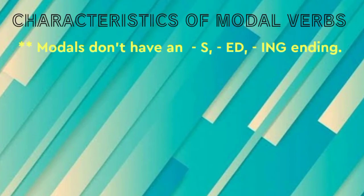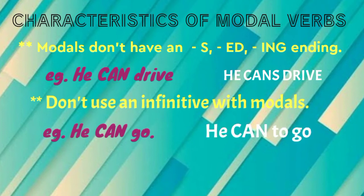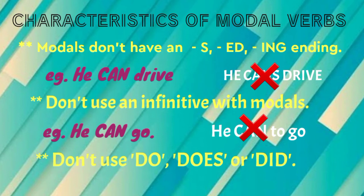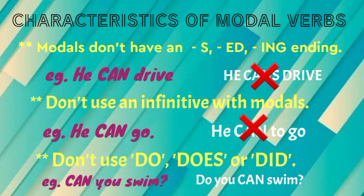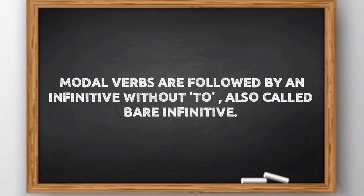Characteristics of modal verbs: Modals don't have an S, ED, or ING ending. For example, 'he can drive' is right, but 'he cans drive' is wrong. Don't use an infinitive with modals — 'he can go' is right, but 'he can to go' is wrong. Don't use do, does, or did with modals — 'can you swim' is right, but 'do you can swim' is wrong. Remember, modal verbs are followed by an infinitive without 'to', also called bare infinitive.